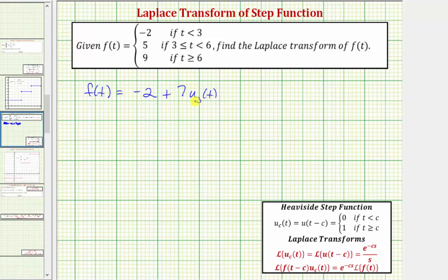When t is less than three, this would be negative two plus seven times zero. And then as soon as t equals three, we'd have negative two plus seven times one, which gives us a function value of five. But then notice as soon as t equals six, we want the function value to be nine, not five.